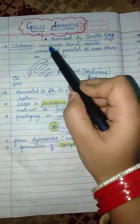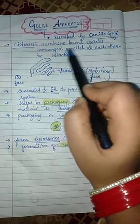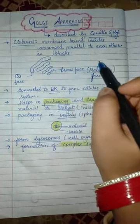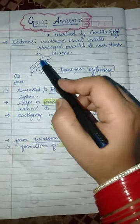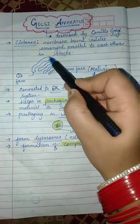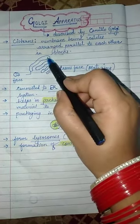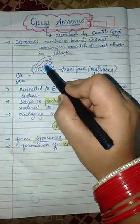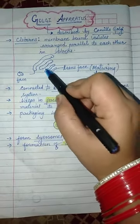The Golgi apparatus consists of membrane-bound vesicles arranged parallel to each other in stacks, that is cisterns or cisternae. These are membrane-bound structures stacked one after another — one membrane-bound structure, then the next, then the next. We can see this arrangement in the diagram here.